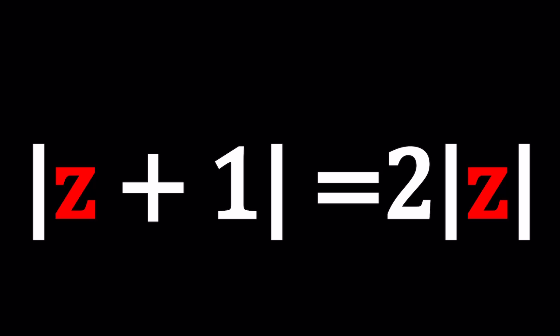So we're given a condition here. A number Z, which is a complex number such that the absolute value of one more than Z, or the absolute value of one plus Z, is the same thing as two times the absolute value of Z.